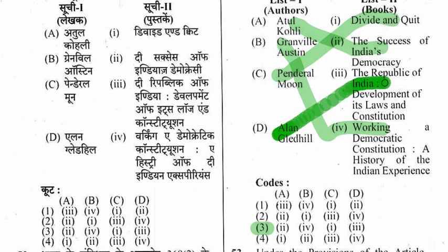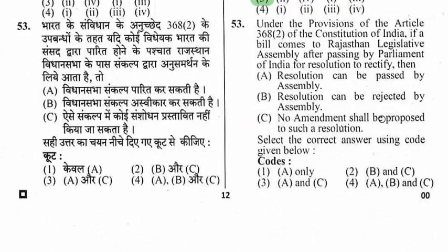Question 53: Under Article 368(2) of the Constitution of India, if a bill comes to a state assembly after passing by Parliament for ratification, what can happen? A resolution can be passed by the assembly, a resolution can be rejected by the assembly, and no amendment shall be proposed to such resolution. The right option is the fourth one — A, B, and C are all correct.